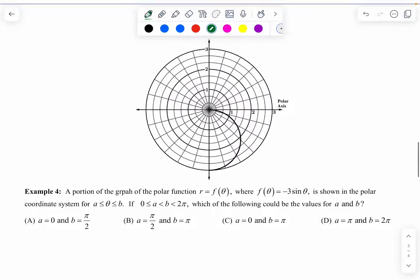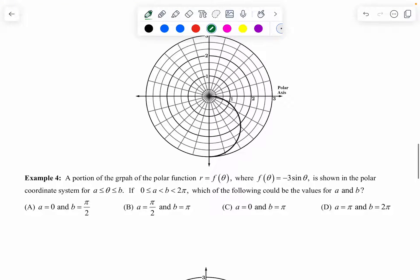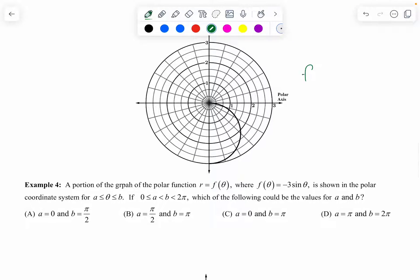Now let's look at this next one. He's got for us a portion of the graph of the polar function r equals f of theta where f of theta equals negative three sine theta is shown in the polar system for A is less than theta is less than B. If zero, okay. So A and B, A is smaller than B. Well, that's obvious. And they live between zero and two pi, which of the following could be the values for A and B? Okay. So basically they're wanting to know, where does this curve start? And where does it stop? So what I might do is I might say, okay, well, what's f of zero, we know to be zero. Okay. That's not very helpful.